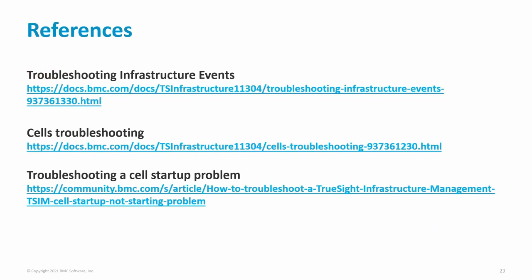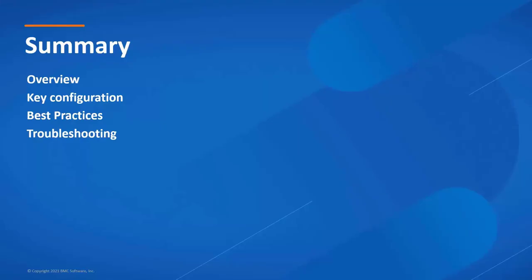This references slide has links for troubleshooting infrastructure events, a general troubleshooting link for the cell, and how to troubleshoot a cell startup problem. In summary, we covered a high-level overview of the cell, then moved on to some key configuration items including a description of the contents of the VAR directory. We reviewed best practice items before moving on to general troubleshooting. That concludes the presentation.